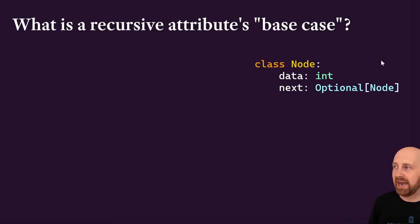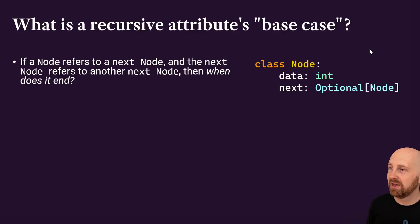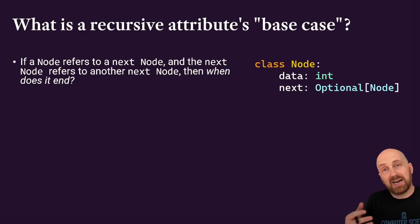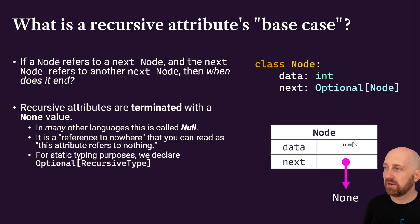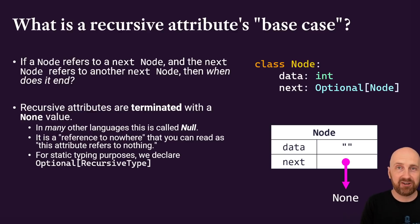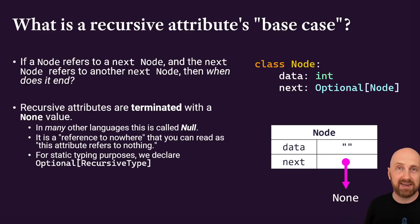So what is a recursive attribute's base case? The answer is already revealed: in a strongly typed Python program, we want to make that next attribute optional — either it's a node, or it's nothing at all (none). When it's nothing at all, you've reached the end of the linked list and there are no more nodes to process. Each node refers to another node, and it ends when the next attribute of some node refers to none and doesn't refer to any other node whatsoever. The base case of a recursive data type is when there are no more references to other objects in the structure to process.